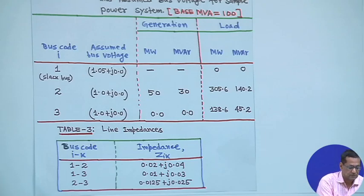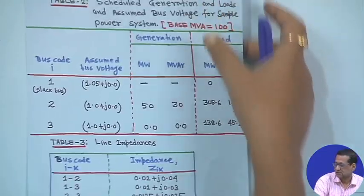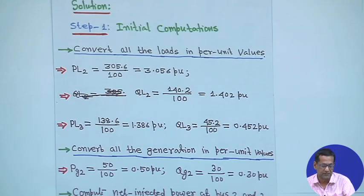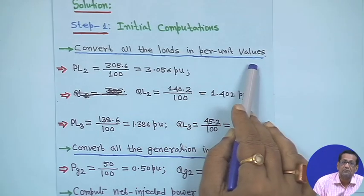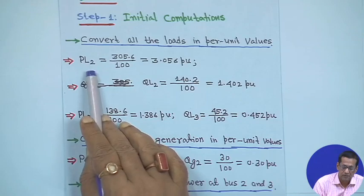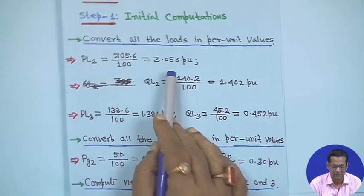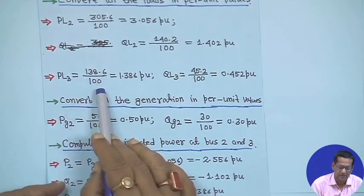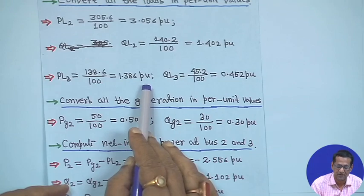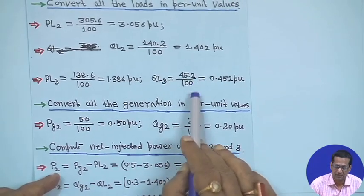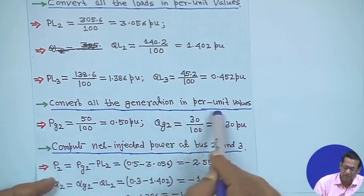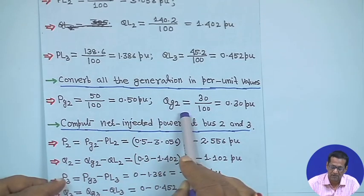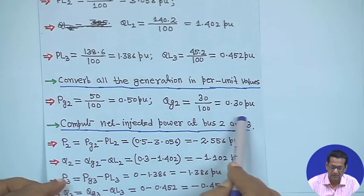Step 1: Initial computations — convert all loads and generation to per unit. At bus 2: PL2 = 305.6/100 = 3.056 pu, QL2 = 140.2/100 = 1.402 pu. At bus 3: PL3 = 138.6/100 = 1.386 pu, QL3 = 45.2/100 = 0.452 pu. For generation at bus 2: PG2 = 50/100 = 0.5 pu, QG2 = 30/100 = 0.3 pu.